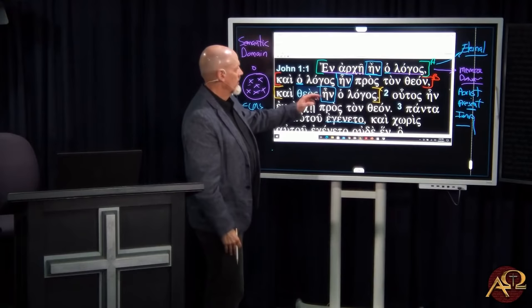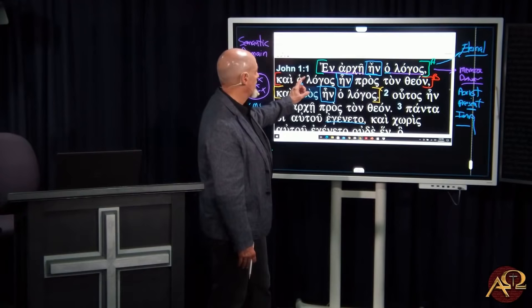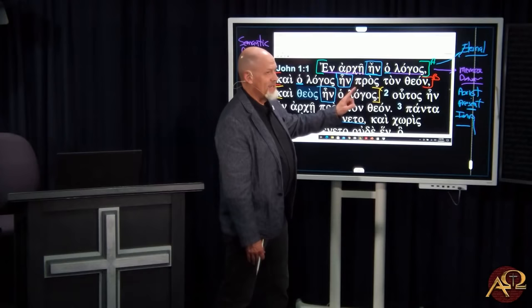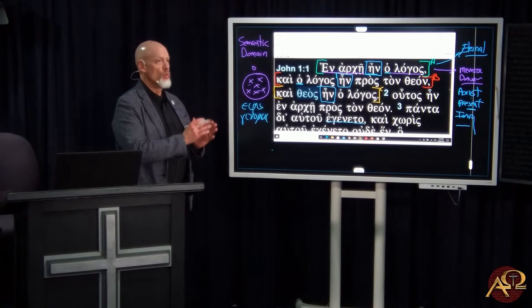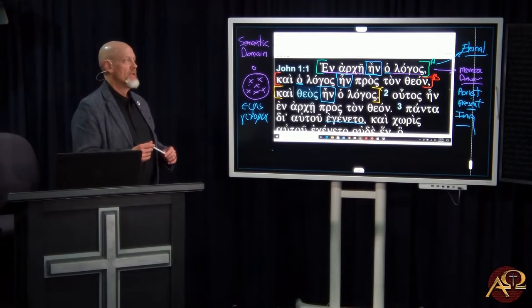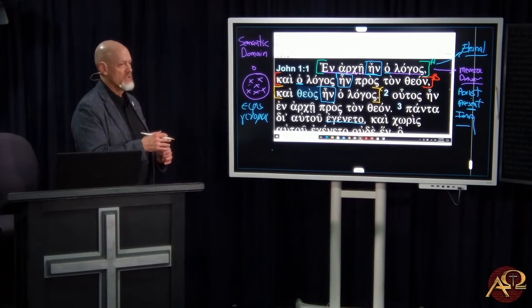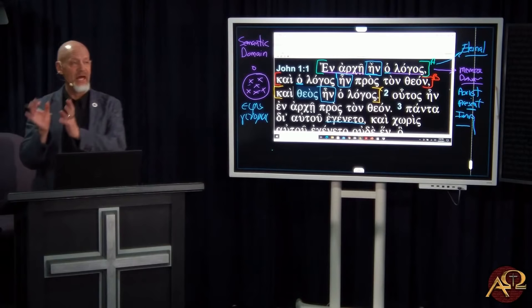But when you have a linking verb, and ēn is functioning this way, and you have a nominative, and you have a second nominative, as we'll have in the third clause, in Greek, the article tells you which word is the subject. So if you had 'God is light,' in Greek, the Greek language can tell you the difference between saying all of God is all of light, or God, the subject, is light, and light's a predicate nominative. How? Through the use of the article.